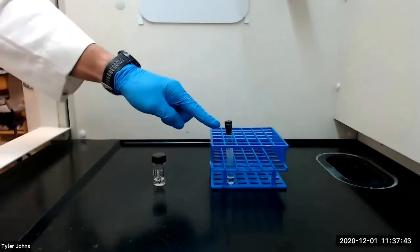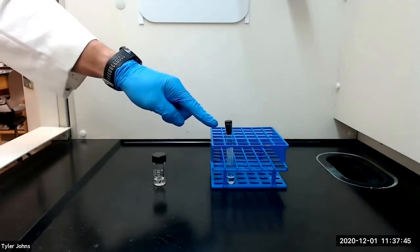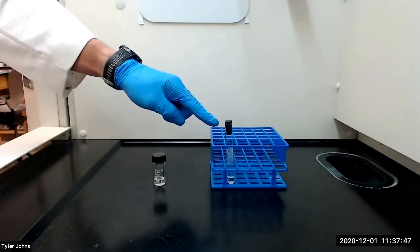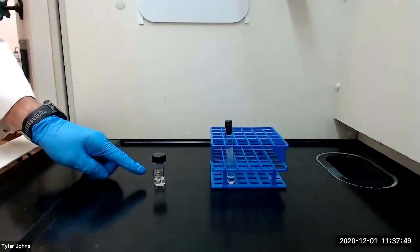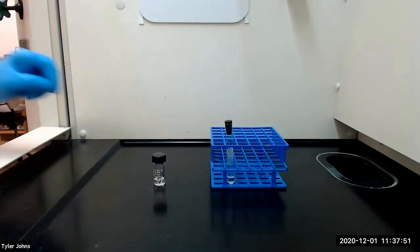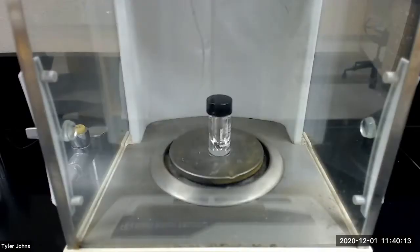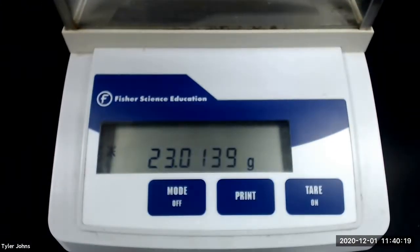While our 4-methyl cyclohexene continues to dry over anhydrous sodium sulfate, we will pre-weigh a new 3-milliliter conical vial. The mass of the pre-weighed 3-milliliter conical vial is 23.0139 grams.